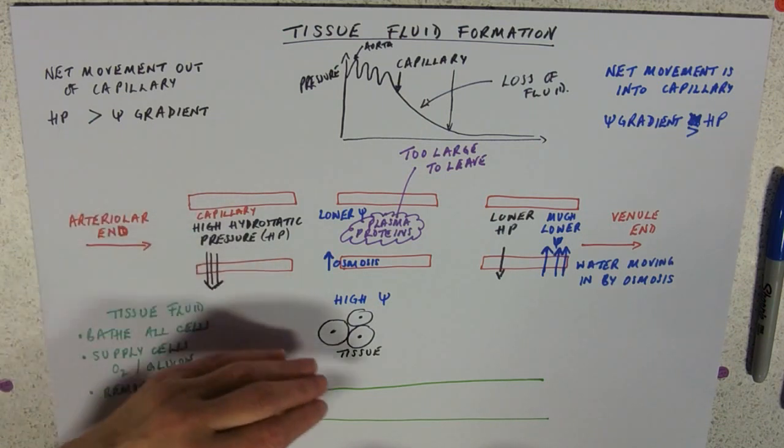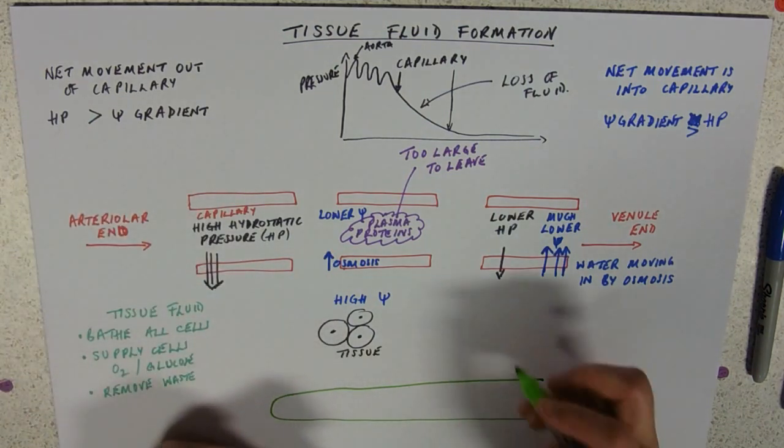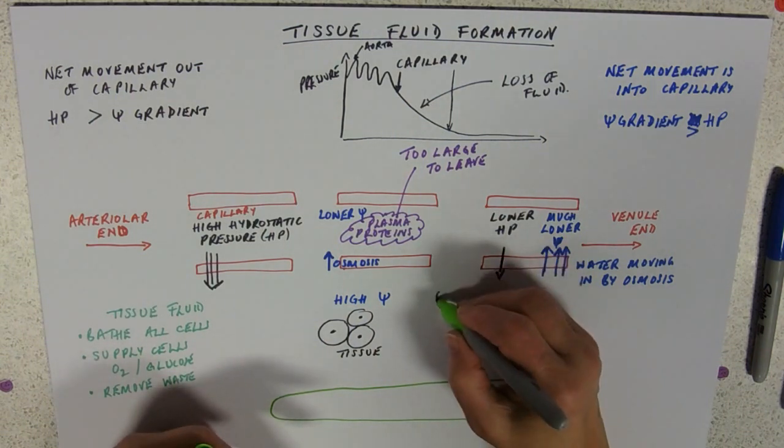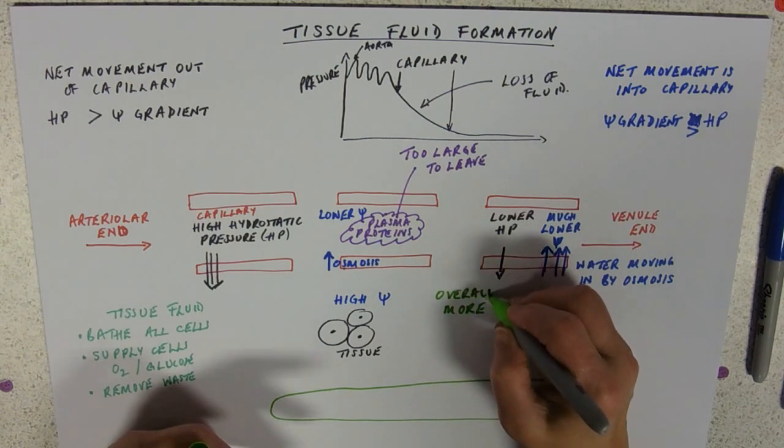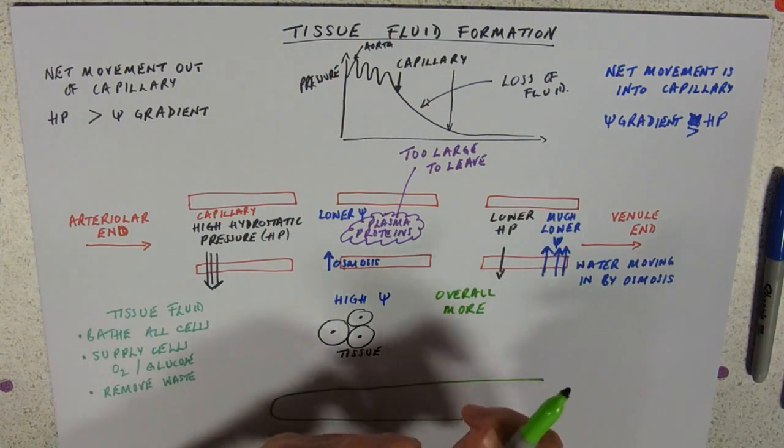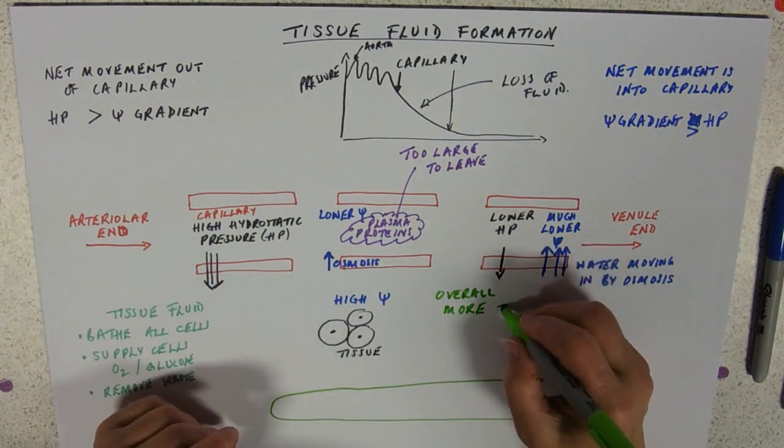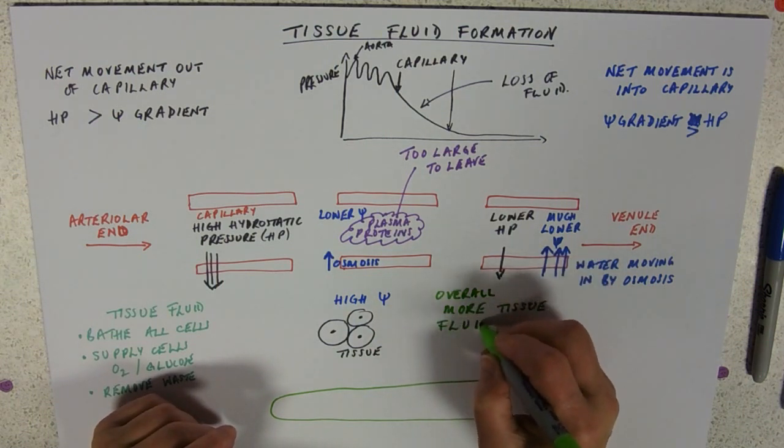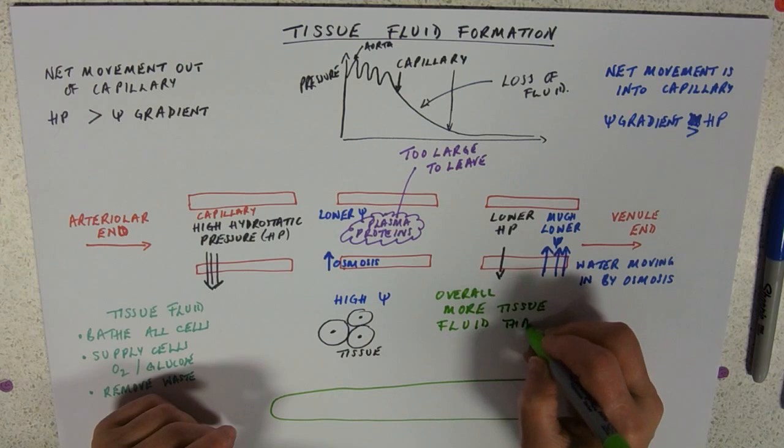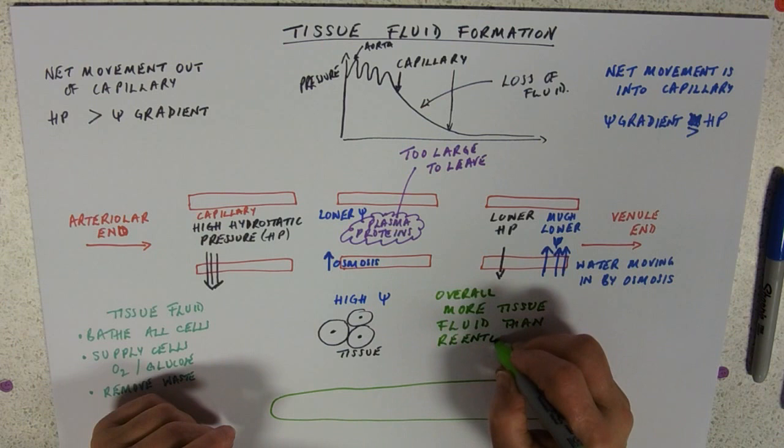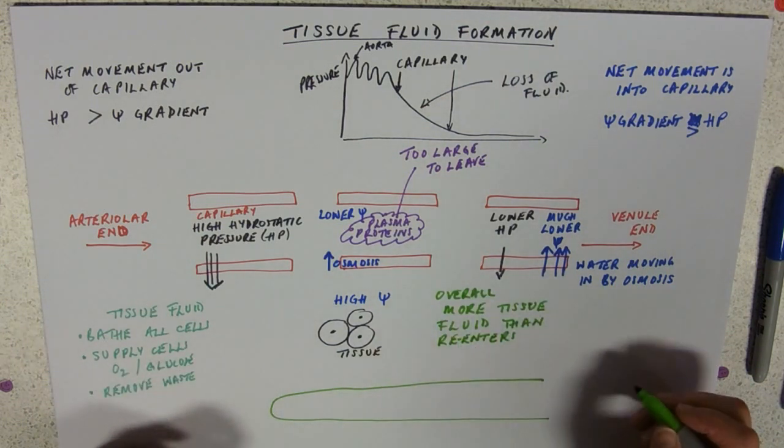In addition, because nothing's ever that simple in biology, the biggest problem is that if we looked at the overall picture, you actually lose the hydrostatic pressure gradient because it is so big as it comes in. There's more tissue fluid formed than recovered overall. It's not that it's circulating around, being forced out at that end and all being dragged back in at the other. Overall we always form more tissue fluid than re-enters.